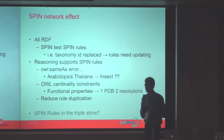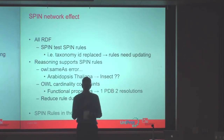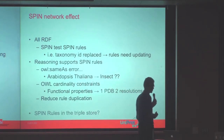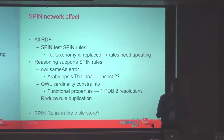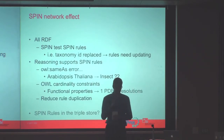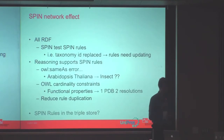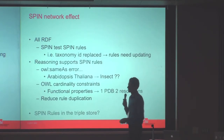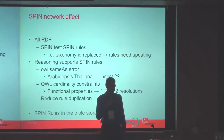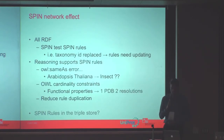SPIN and RDF have a useful network effect — we realized we also need quality rules for the rules themselves. As our data changes, a rule that referenced a certain NCBI taxonomy ID became invalid when that tax ID was merged with another organism. The person maintaining the rules hadn't noticed, so we had 40 exception rules that were no longer valid, testing things no longer required. So it's very valuable to be able to test your rules to make sure they're still good.